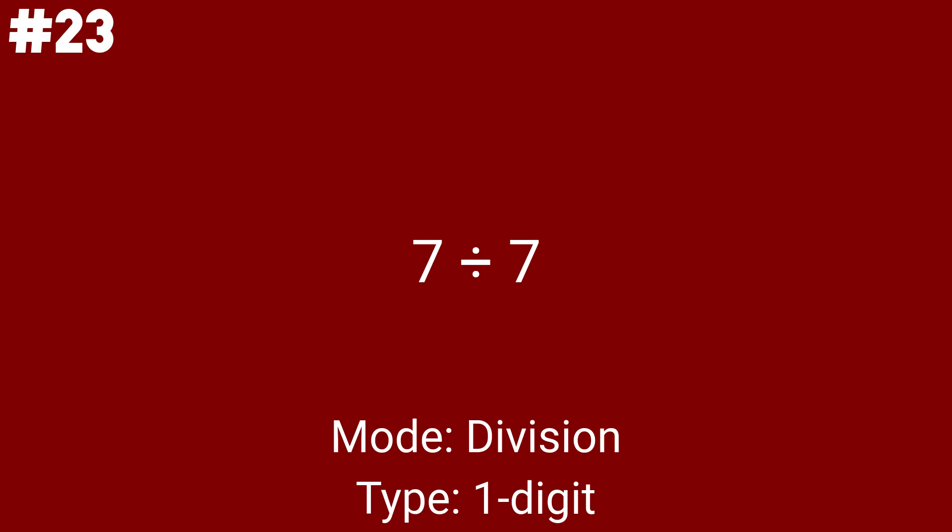7 divided by 7 is our third division problem. There are 30 multiplication problems and 25 division problems. 9 divided by 3 is our fourth division problem — the first that's not anything divided by 1 or n divided by n. 5 divided by 1 is the last one-digit division problem, division problem number 5. After solving this, you'll have solved 1 fifth of the division problems.